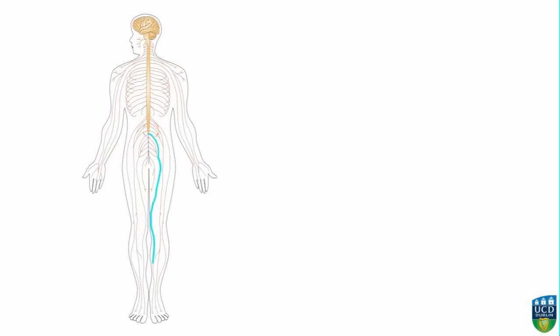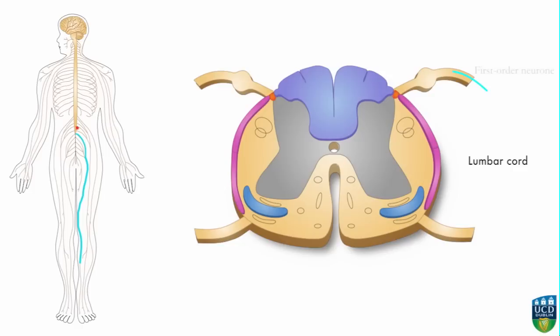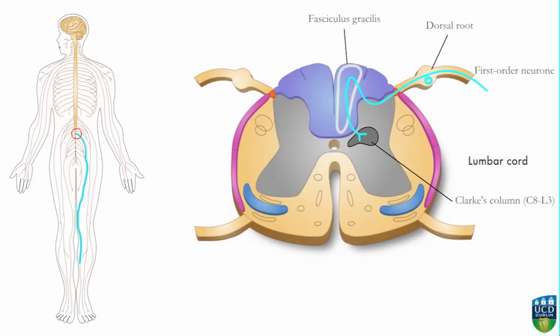The impulse is carried by the first order neuron into the spinal cord via the dorsal root, where it then enters fasciculus gracilis. The axon of the first order neuron ascends for a number of segments before terminating in Clark's column. Second order neurons arising in Clark's column enter the ipsilateral dorsal spinocerebellar tract.